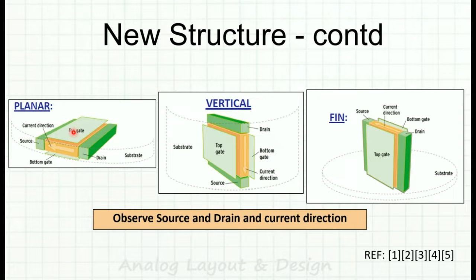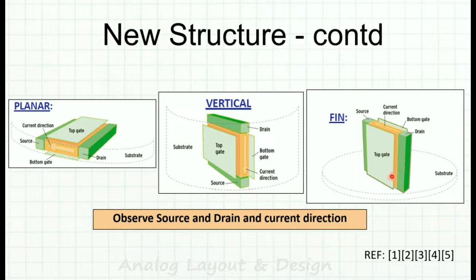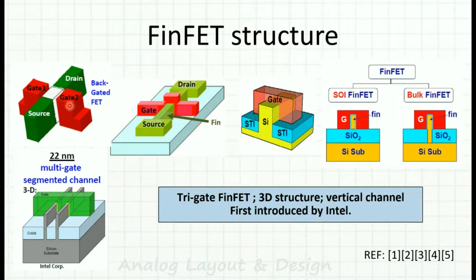With a top gate and bottom gate structure, fabrication is difficult because the bottom gate is hard to process. So a vertical structure was tried — drain at top, source at bottom, current flowing vertically, with gates on both sides. But that too was difficult to fabricate with the source at the bottom. Finally they arrived at the current FinFET structure: drain and source oriented horizontally, current flowing in that direction, gate on both sides — easy to fabricate, with a vertical fin.